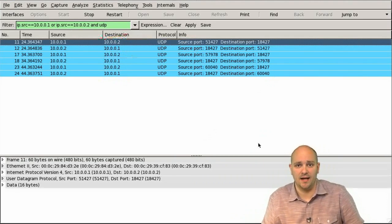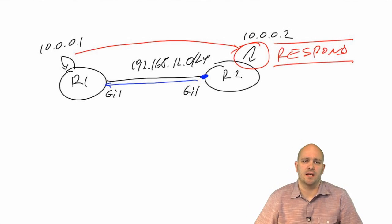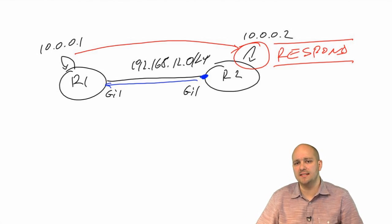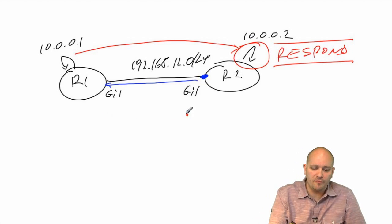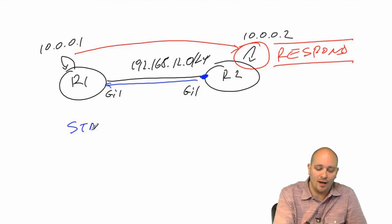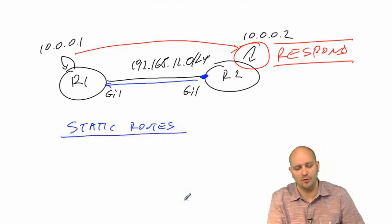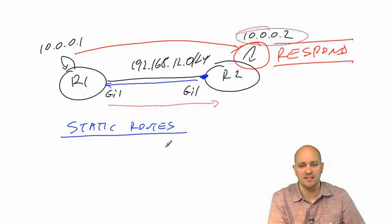Other than entertainment, what can IP SLA probes be used for? They can measure network performance, but on their own that's not very useful. Where they're very commonly used is in combination with features that aren't responsive to network changes — particularly static routes. Here on R1 we have a static route helping R1 reach 10.0.0.2, with the next hop being R1's connected interface. R1 is statically configured to send traffic to 10.0.0.2 through that interface.